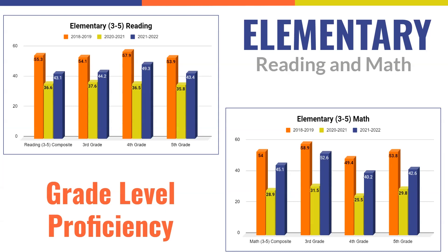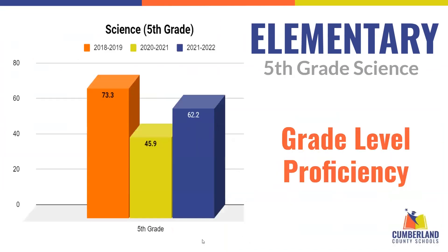On average in our elementary schools, reading gained approximately 6.5 percentage points from last school year, and math gained on average 16.2 percentage points, with the highest gains occurring in third grade math. Proficiency levels increased in third grade by a total of 21.1 percentage points. The science assessment given in fifth grade produced results that are again very similar, with a 16.3 percentage point increase.